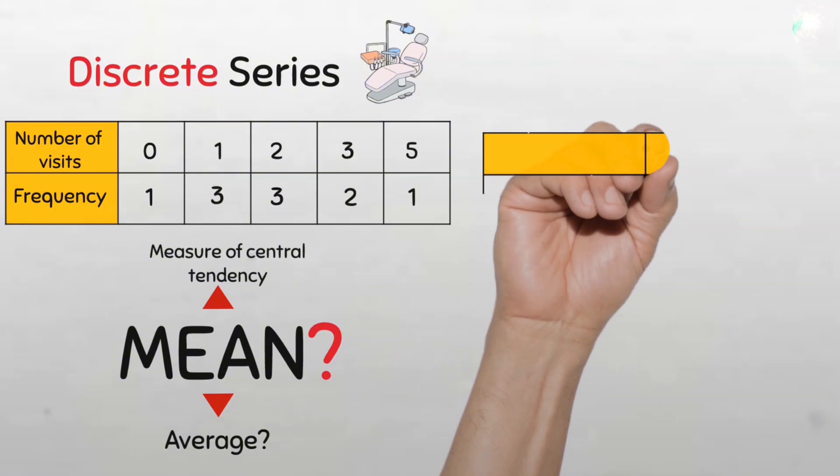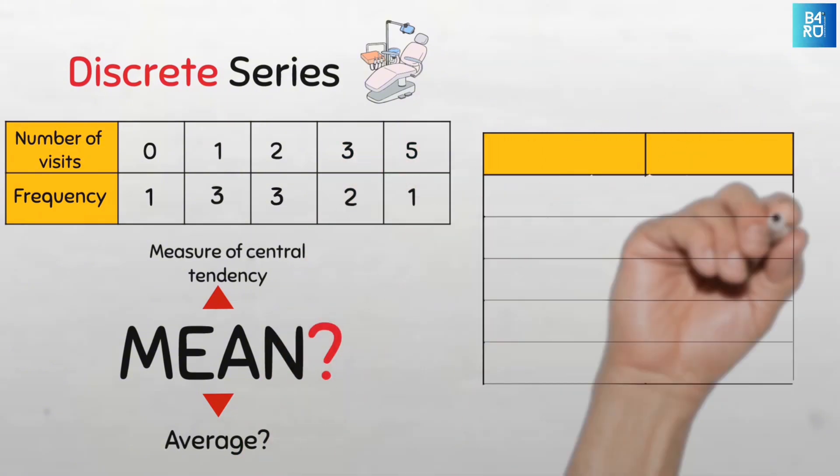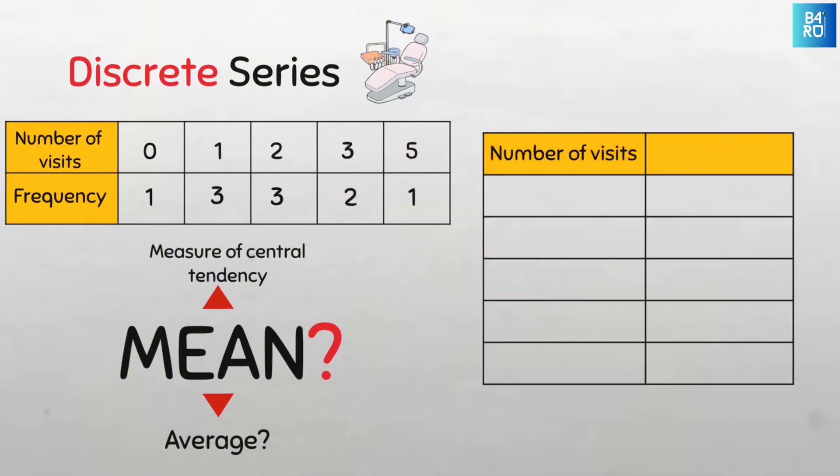Let's first modify the table a bit to make it easy for us to compute the mean. So let's put the number of visits here and the frequency here. And then we have all the data arranged neatly in a vertical manner, like so. Better.